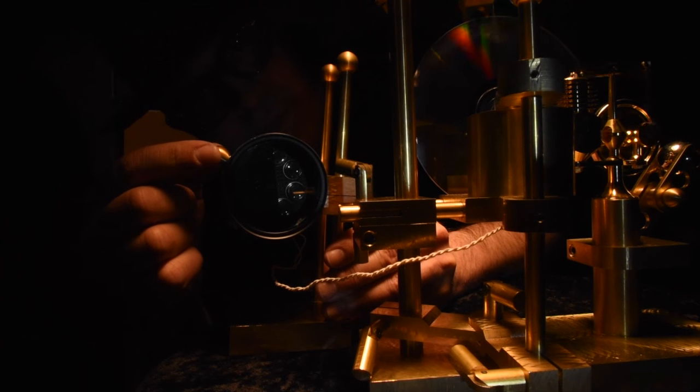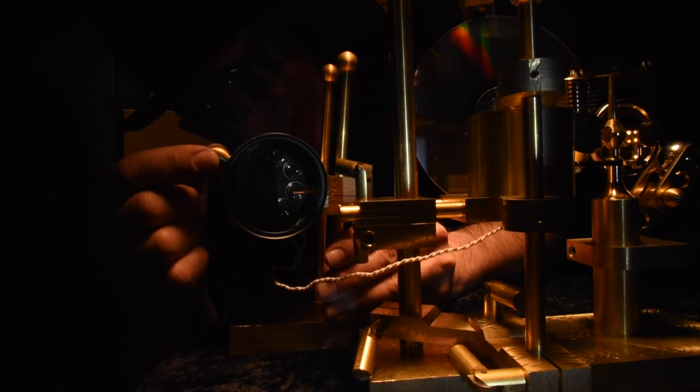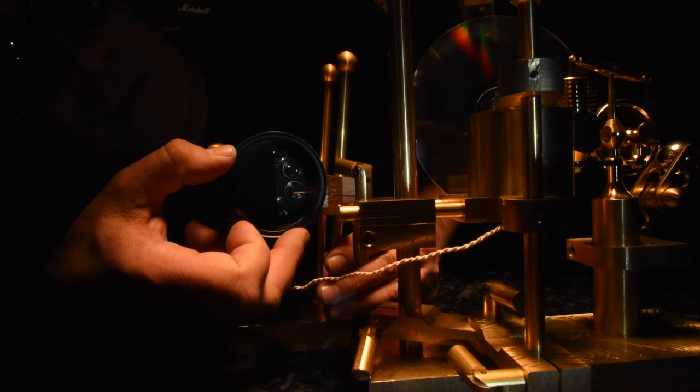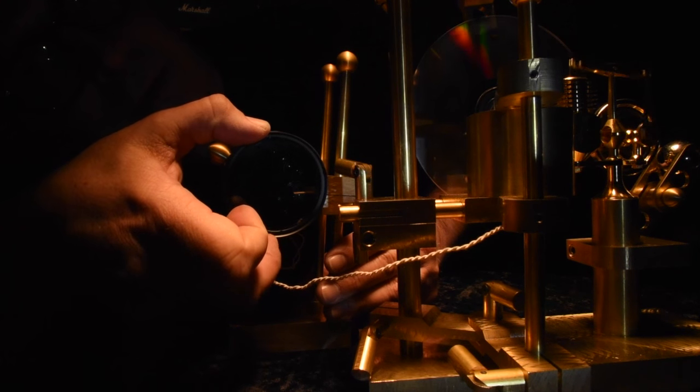You can adjust this knob to choose how much phaser or vibrato sound you want, or mix between the two. And you can adjust the overall intensity of the light with this filter on the front of the electronics package.